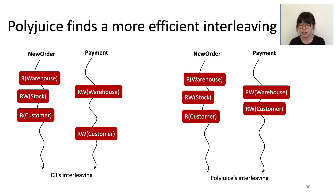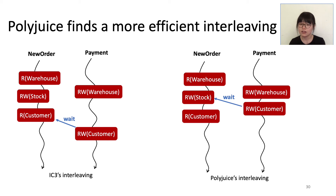On the left is the interleaving of IC3, which performs the best among existing algorithms — the second write access of payment is made to wait for the third access of new order, derived via static analysis. On the right, Polyjuice's interleaving of the same two transactions is visually more efficient. One reason is that Polyjuice has learned to wait for an earlier access in new order. There are other intricate actions needed to support this earlier wait, with more detailed analysis in the paper.